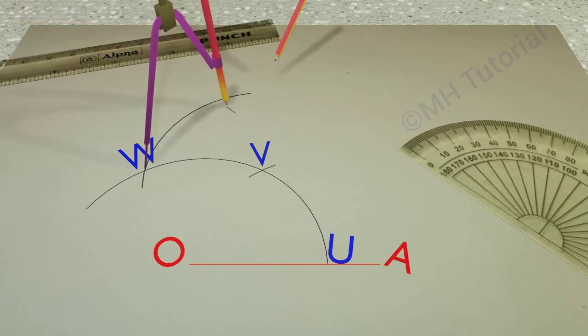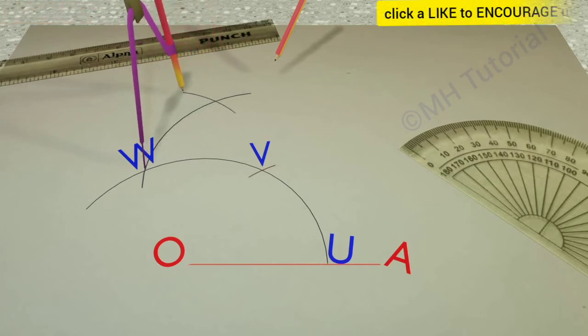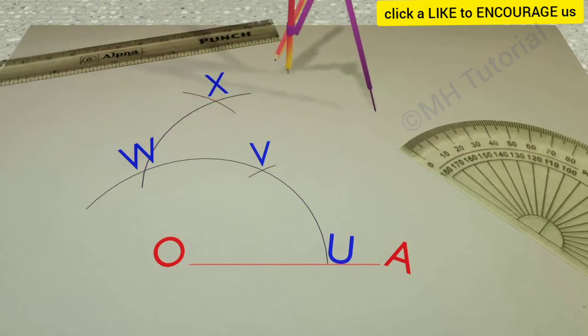Placing the tip of the compass on W, another circle arc is drawn to get an intersection against the third arc. The point of intersection is X.